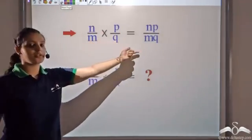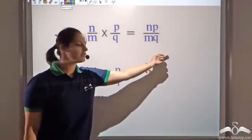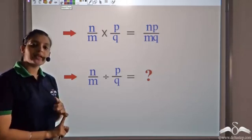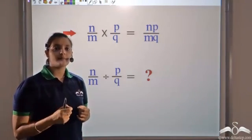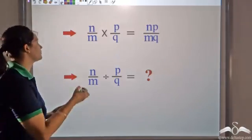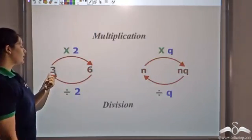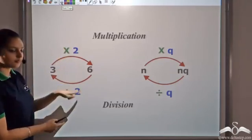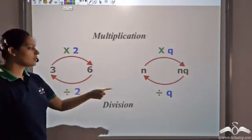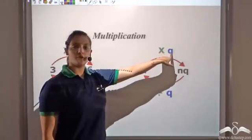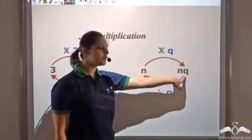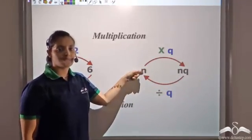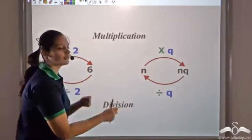So we have seen how to multiply any two rational numbers. Now let's see how to divide two rational numbers. Division is nothing but the reverse operation of multiplication. If I multiply 3 by 2 I get 6, and if I divide by the same number I get back to 3. So if I have n and multiply it by q I get nq, and if I divide by q I get back to n — that is what division means, the reverse of multiplication.